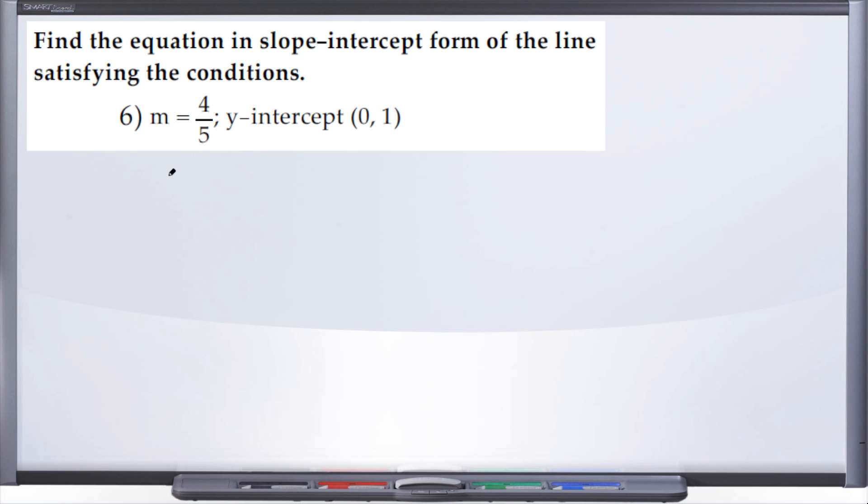Well, what form of a line contains the slope and y-intercept? We've already seen it so far in the review series. We've worked with it a couple times and hopefully you're thinking slope-intercept form, which of course is y equals mx plus b.